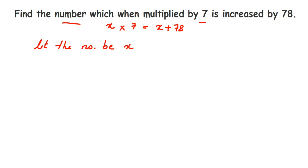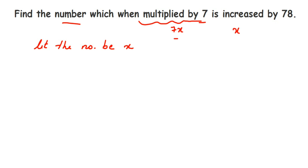Number when multiplied by 7 means this part will be 7x. Increased by 78 means to the original number, after multiplying, whatever answer you're getting is nothing but the number when you add 78. So the linear equation will be 7x is equal to x plus 78.